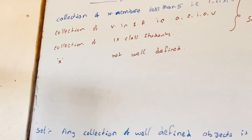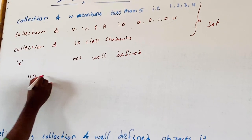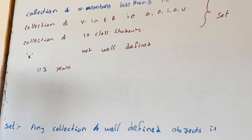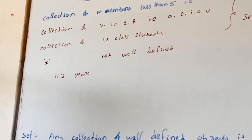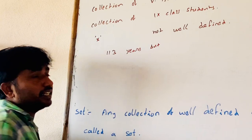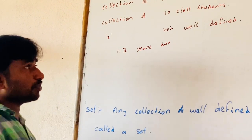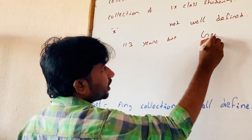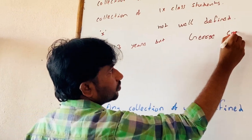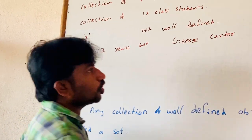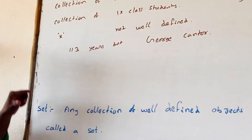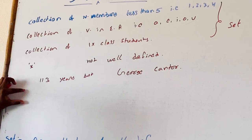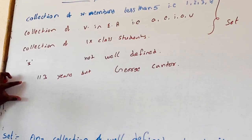This concept was recognized about 130 years back. The theory of sets was developed by the German mathematician Georg Cantor. The theory of sets enriched every branch of mathematics.